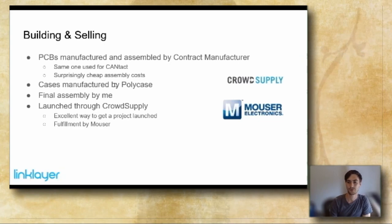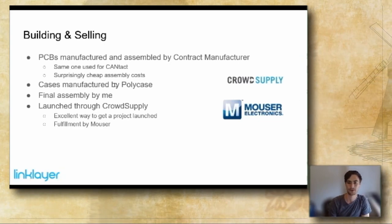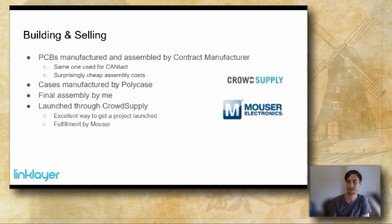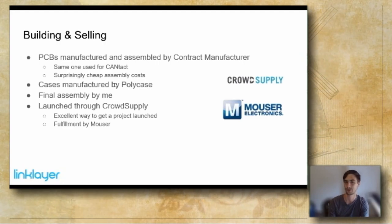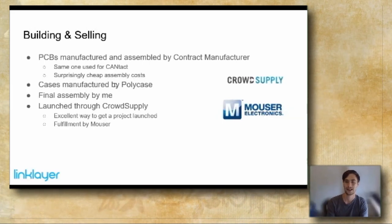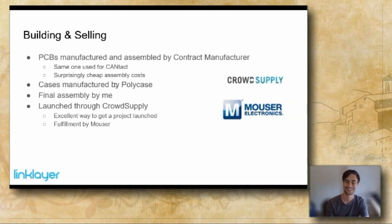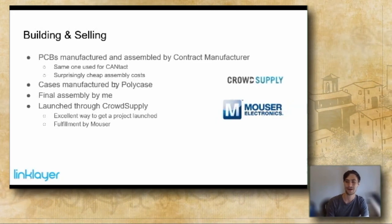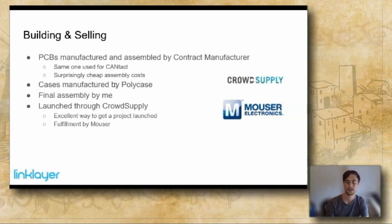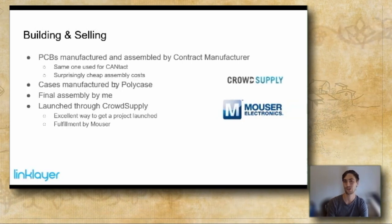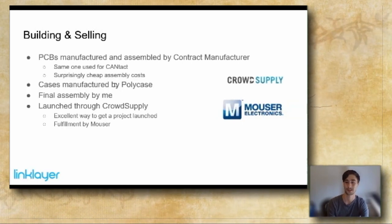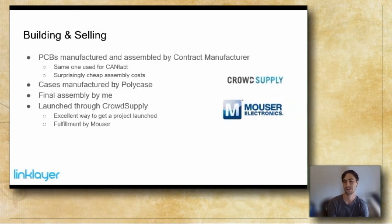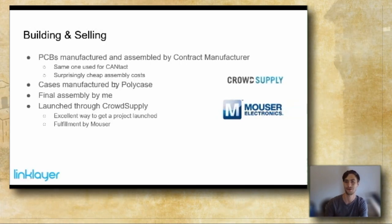On building and selling the product: I used a contract manufacturer in China to assemble the boards, which is pretty cheap nowadays. Once you're building more than one or two units, start looking at contract manufacturers. The cases were made by Polycase, and I personally did all the final assembly here — made in Canada, assembled in Canada with foreign parts. I launched through CrowdSupply, a crowdfunding platform that's great for hardware products. I set the goal at $1 since I'd already ordered the stock, but CrowdSupply provides social media support and links you up with Mouser — one of the largest electronics distributors in the world — so you can now buy the CANTAC Pro on Mouser anywhere in the world.